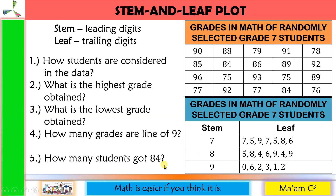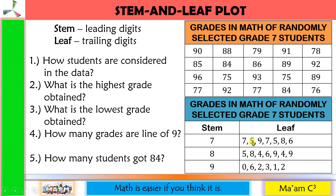Now let us answer these questions. How many students are considered in the data? You can count in the original table — 5 columns times 4 rows equals 20. Or you can count the number of data in the leaf column, which also gives 20. So there are 20 students.